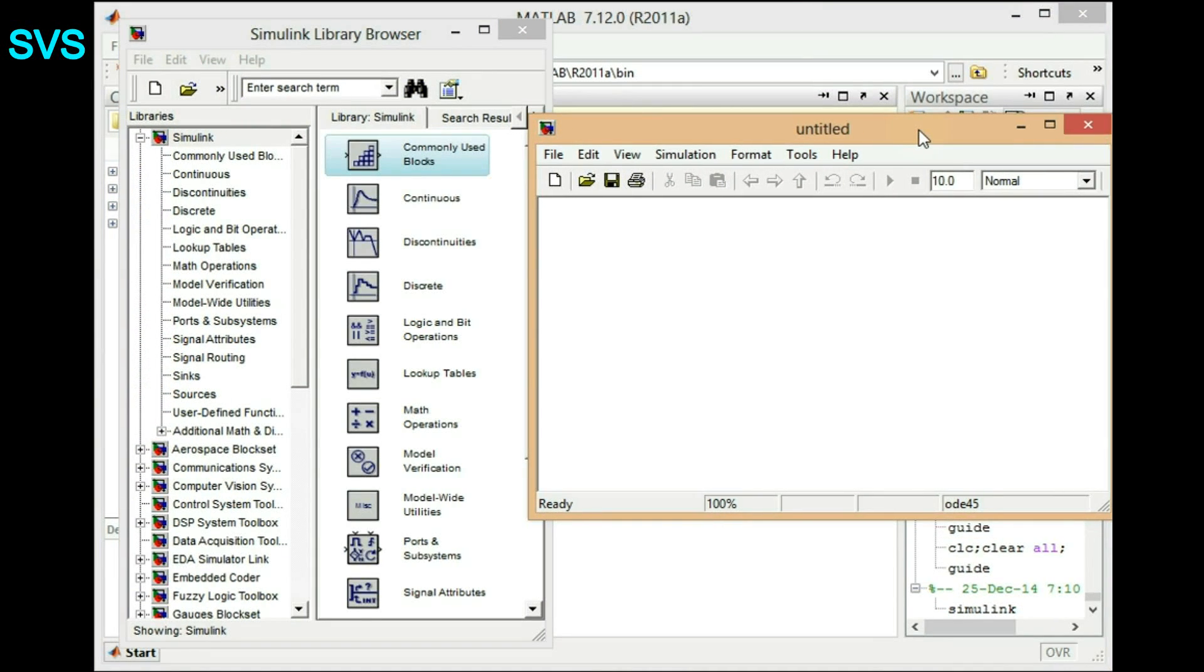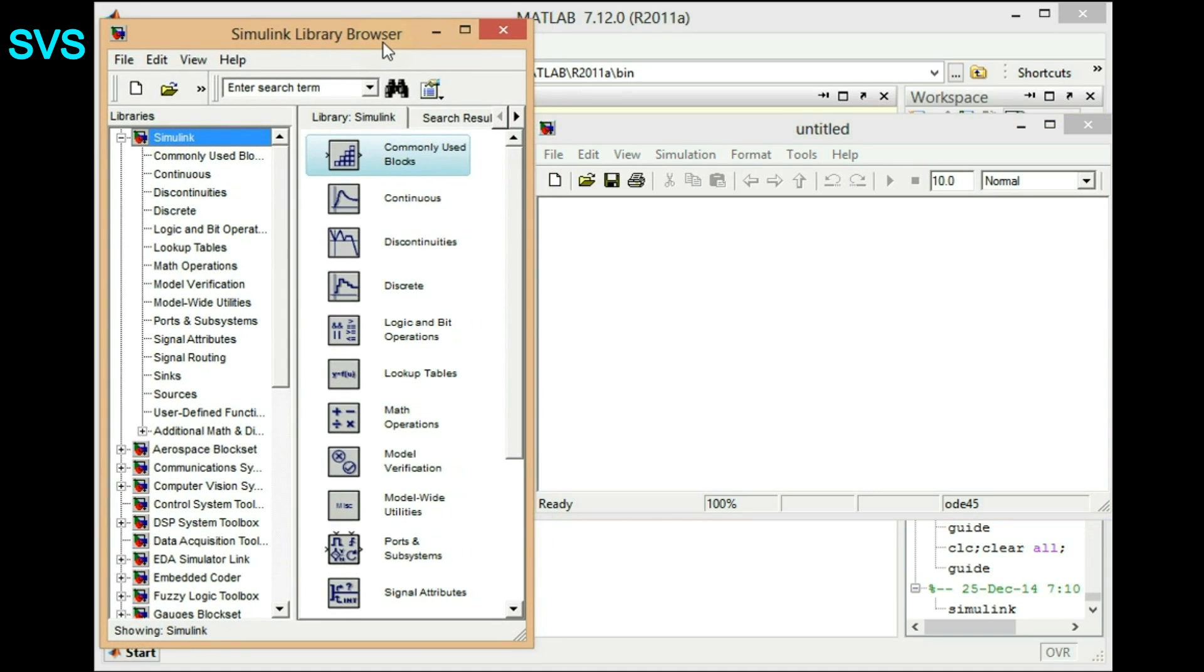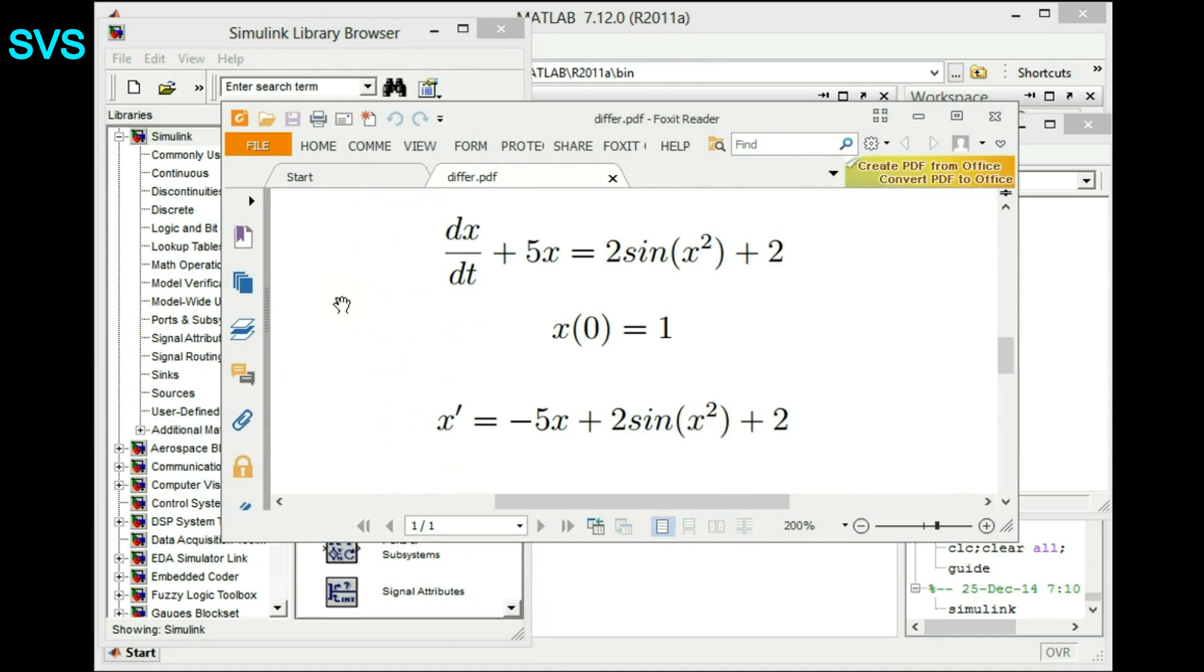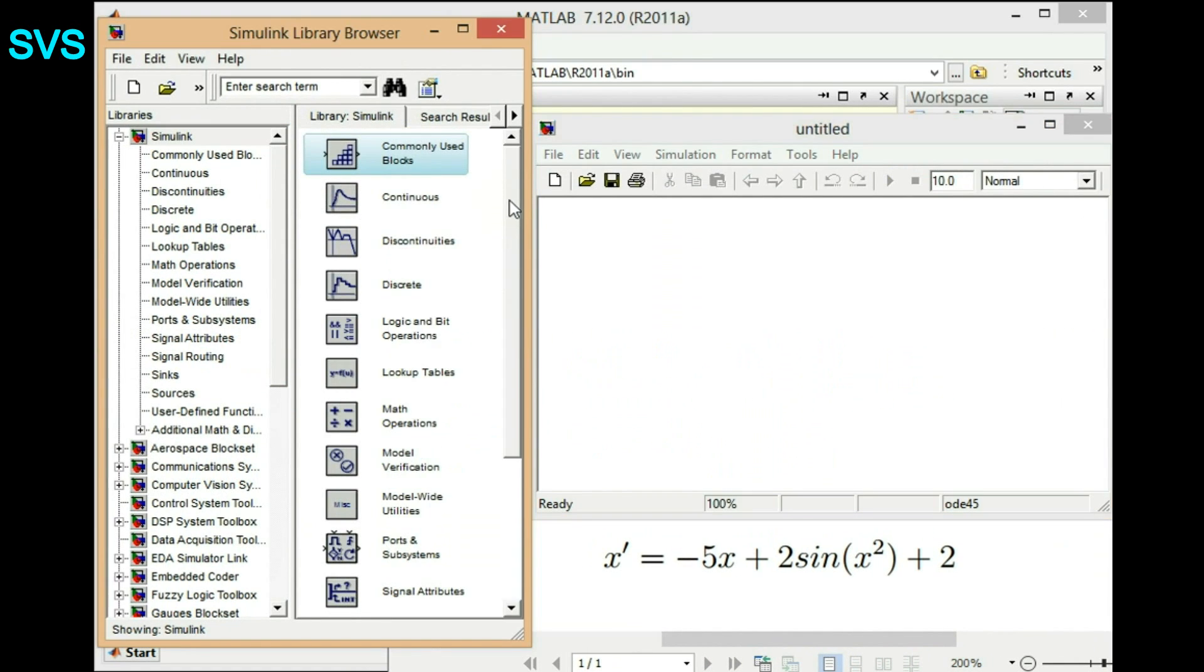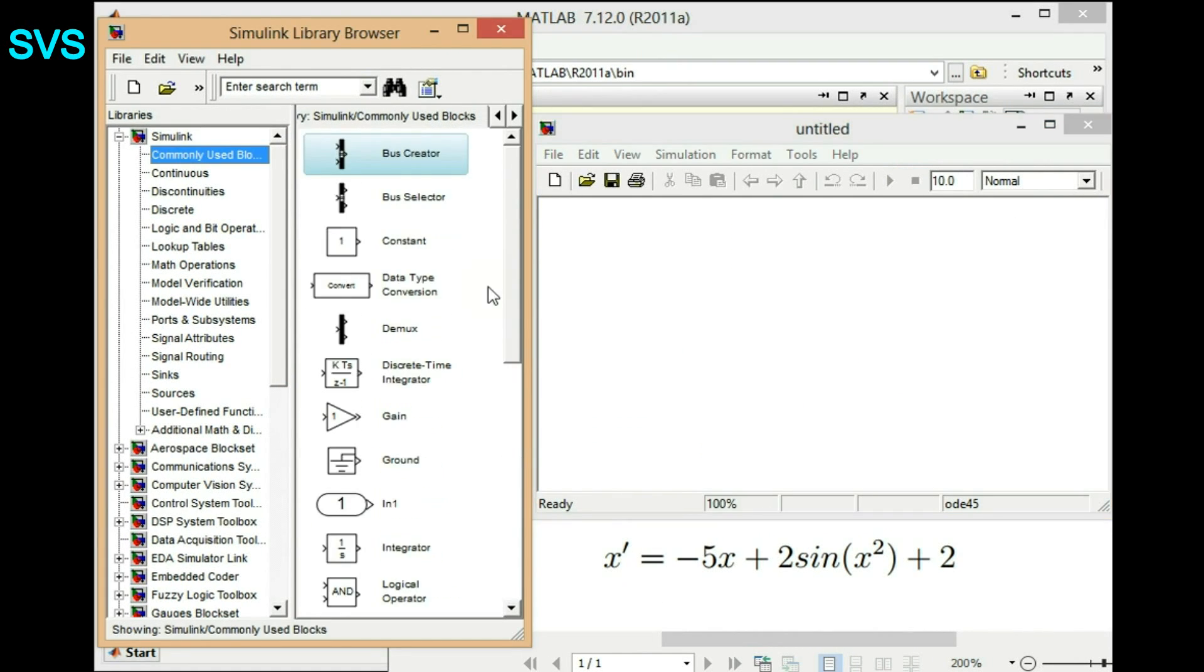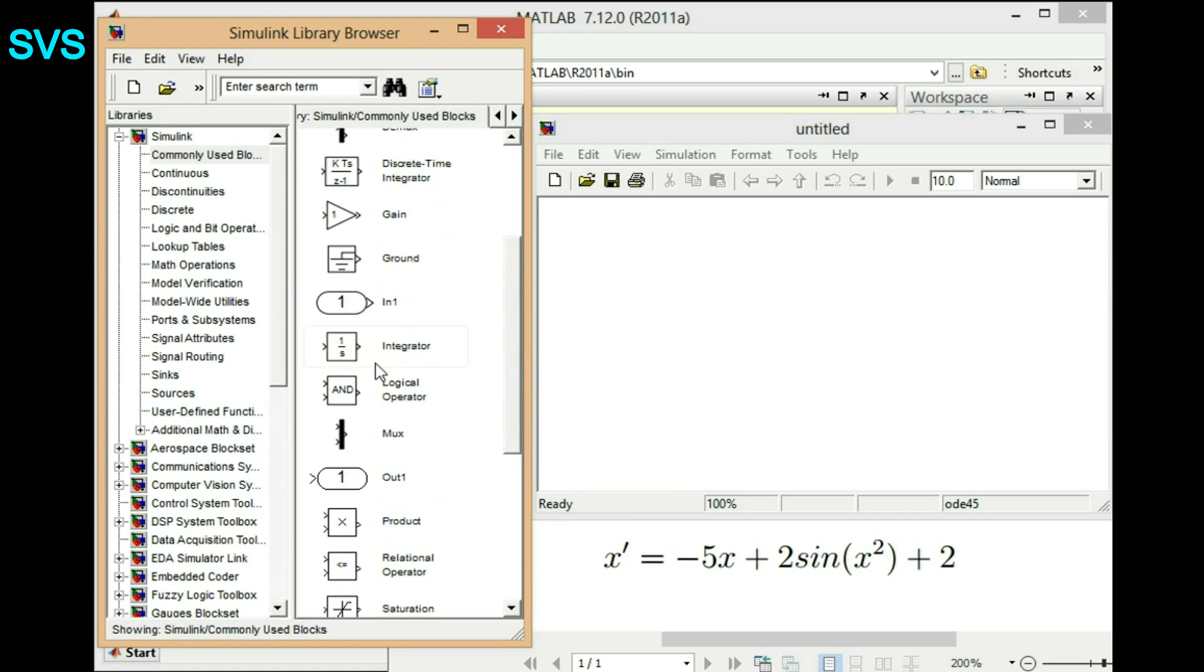Let's get started. We'll open the Simulink library and then we want to implement that equation, which is x dash equals minus 5x plus 2 sine x squared plus 2. To implement, we'll assume we know x dash, so we'll take an integrator and we'll assume we have x dash given. So we'll just write as x dash - it's just for our convention - and here we have x as we integrate that differential, we will have x.